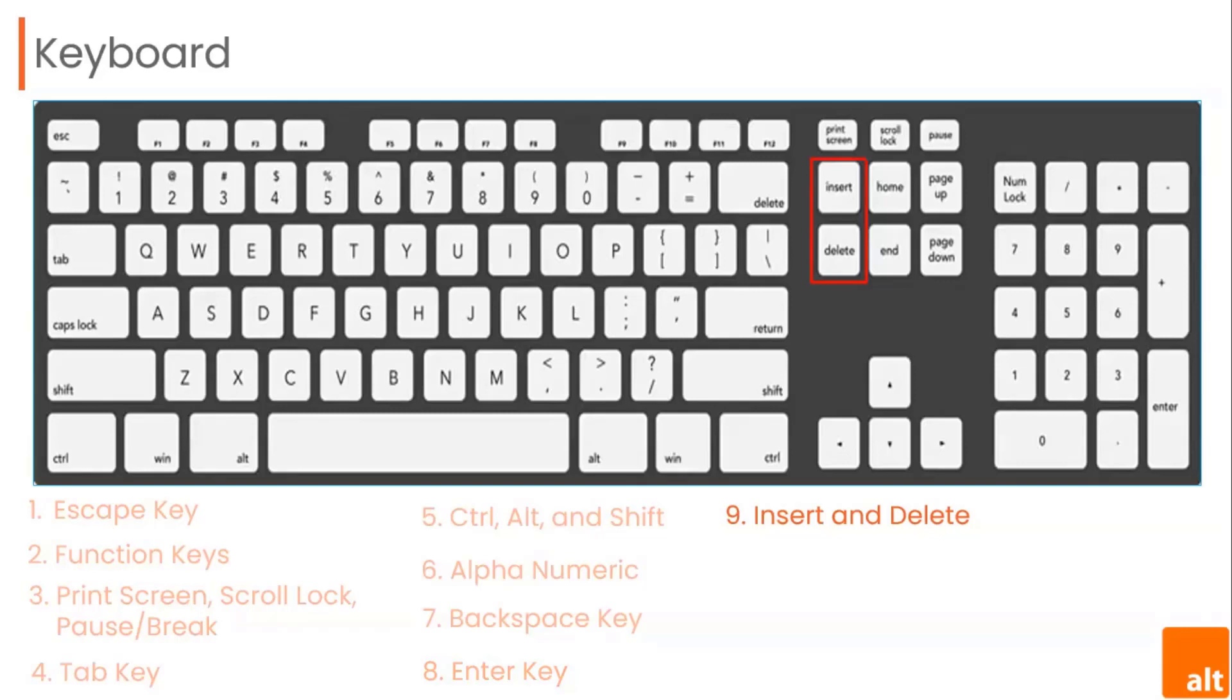Insert switches between insert mode, which inserts new text without deleting anything, and overtype mode, which deletes text after the cursor as you type. The Delete key erases the character to the right of the cursor. The Home and End keys move the cursor to the beginning or end of the current line. Page Up and Page Down scroll a document or web page up or down. The arrow keys are used for many different purposes, including moving the cursor, scrolling the document, and controlling a game.